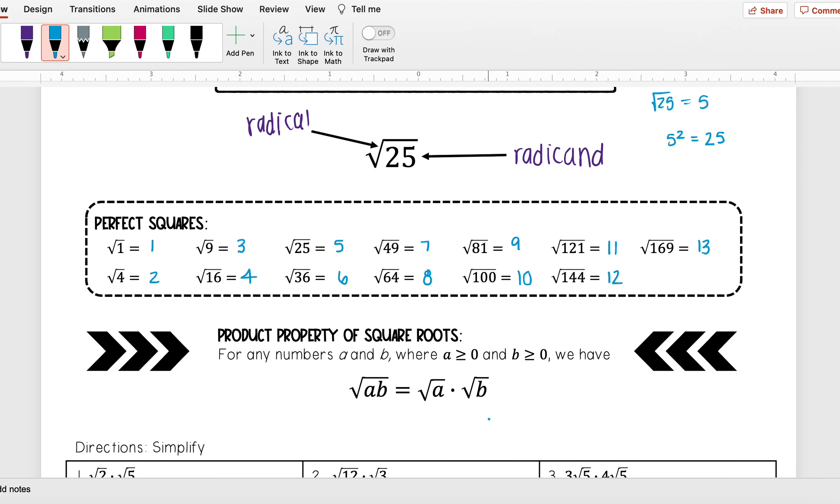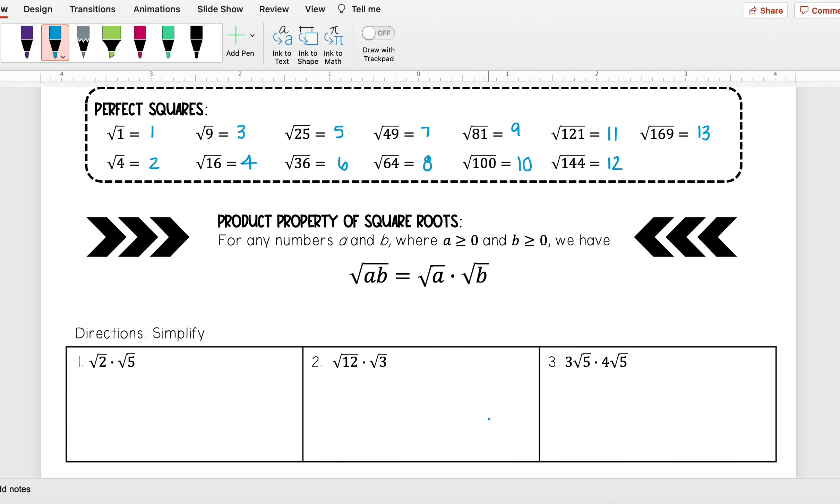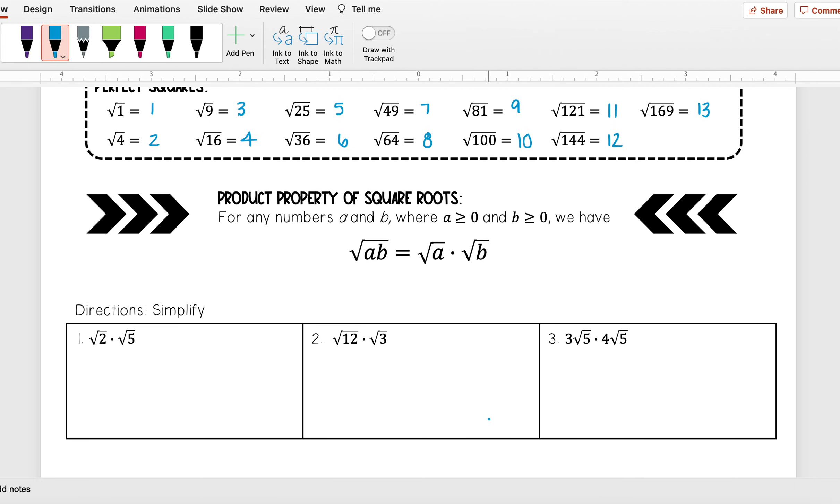Something special that square roots have is the product property. That tells us for any numbers a and b where both a and b are greater than or equal to 0, we have that the square root of ab is the same thing as the square root of a times the square root of b. So let's look at some examples of that.